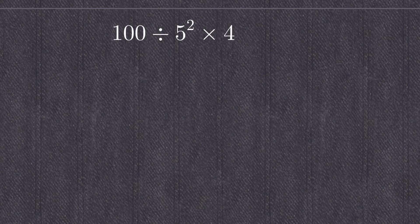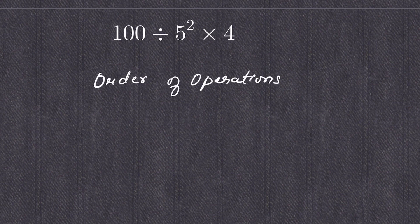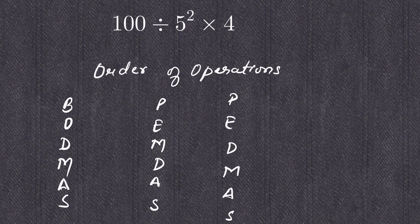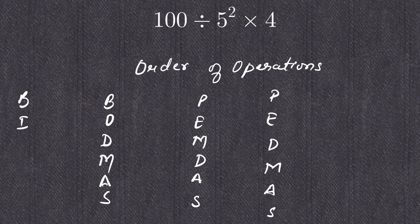Hundred divided by five squared, multiplied by four. This is a question of order of operations, so we follow the rules of BODMAS, PEMDAS, or BIDMAS. All of these rules are the same; they are not different.